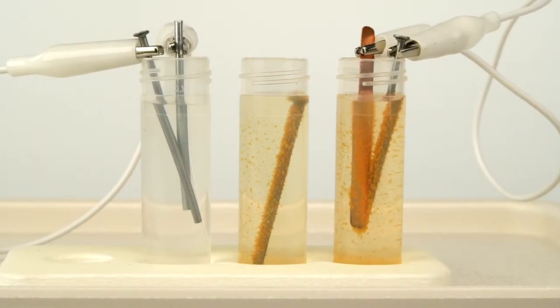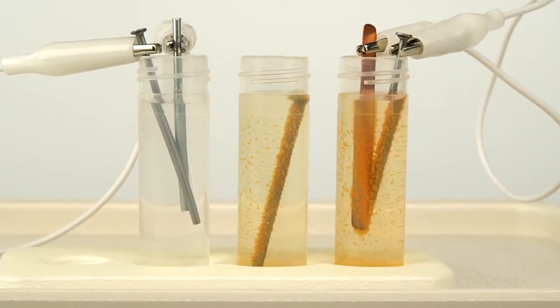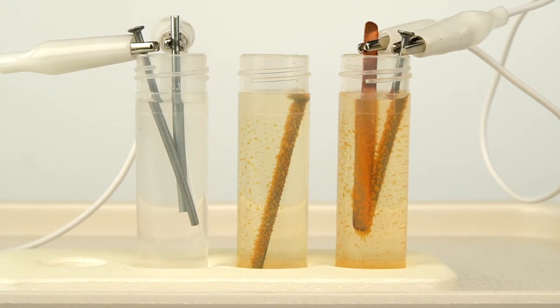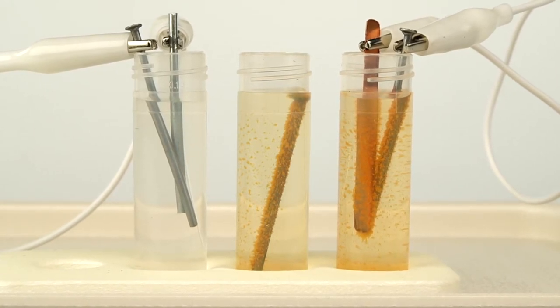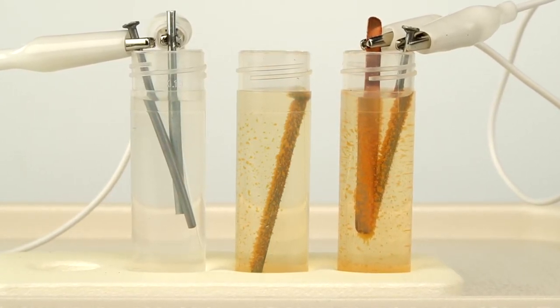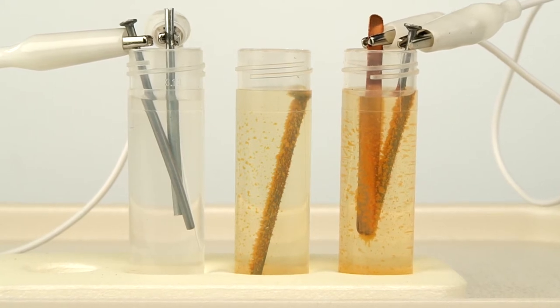Compare your vials after 24 hours. Electrons travel along the wires from the more reactive to the less reactive metal. The fewer electrons a metal is left with, the faster it corrodes.